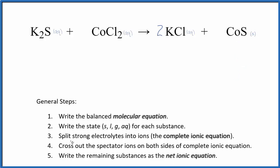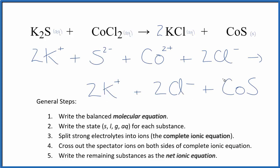Next, we're going to split the strong electrolytes into ions for the complete ionic equation. We've split all of the aqueous compounds up, but the solid, our precipitate, we keep that together. We don't split that apart into ions.